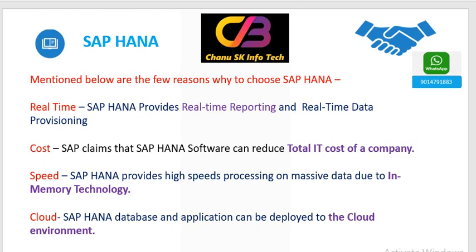Regarding cost, SAP HANA can reduce the total IT cost of any company. Regarding speed, it works a thousand times better comparing to other databases. SAP HANA provides high speed processing and handles massive data due to in-memory technology — because of in-memory technology, the processing speed is more powerful and massive data can be stored in the database.